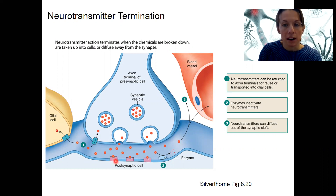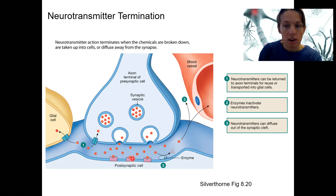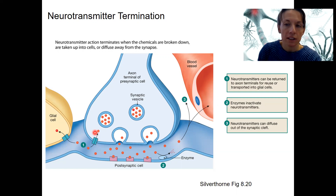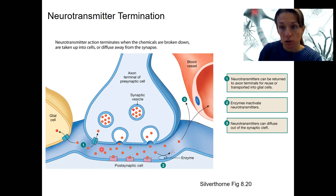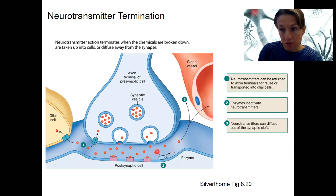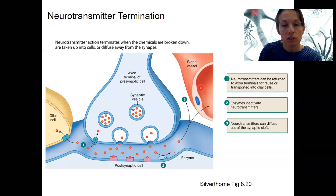Neurotransmitter signals need to be removed from the synaptic cleft to stop receptor binding, and this can happen three ways. First, the neurotransmitter can be returned to the axon terminal — this is called reuptake. SSRIs (selective serotonin reuptake inhibitors) work by inhibiting this process, leaving more serotonin in the cleft. Glial cells can also take up neurotransmitters. Second, enzymes can break down neurotransmitters via a chemical reaction. Third, neurotransmitters can simply diffuse away — taken up into blood vessels or glial cells.